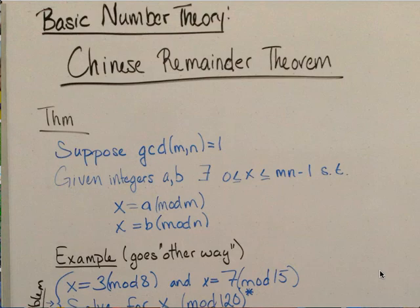In basic number theory, the Chinese Remainder Theorem states that suppose the GCD of m, n is 1, then given integers a, b, there exists an x in between 0 and mn minus 1 such that x equals a mod m and x equals b mod n.